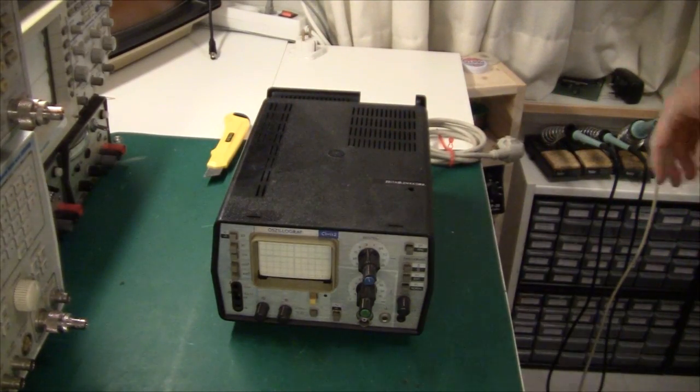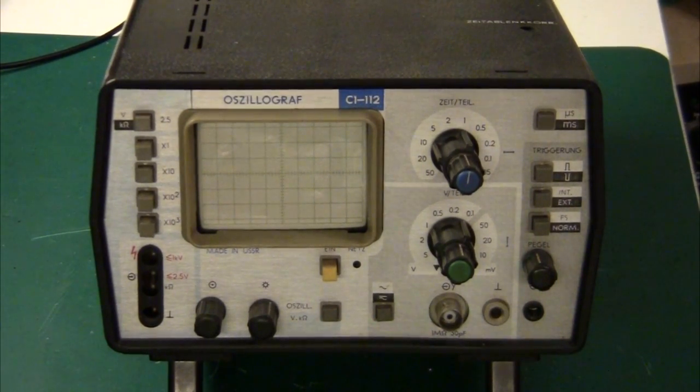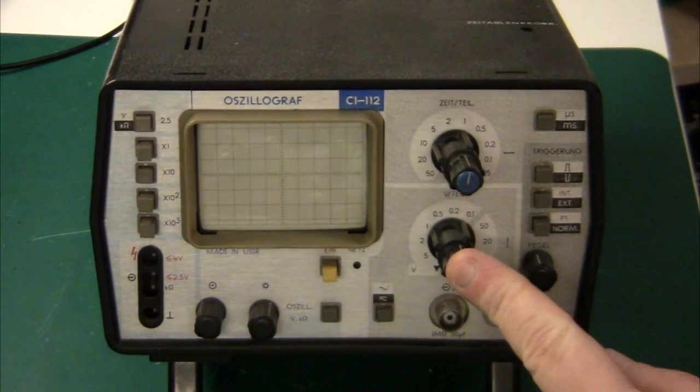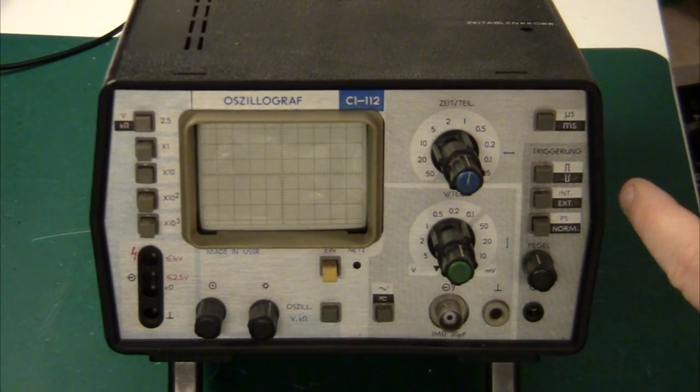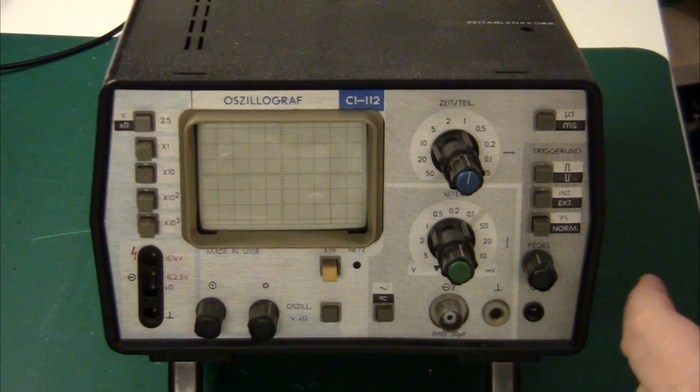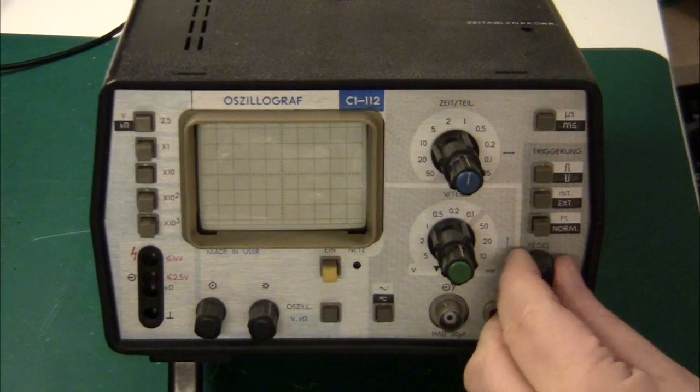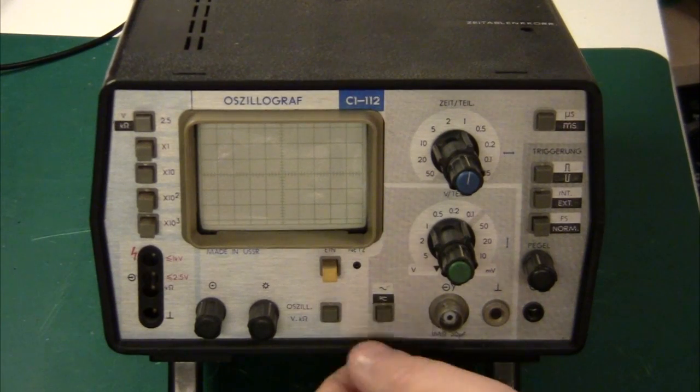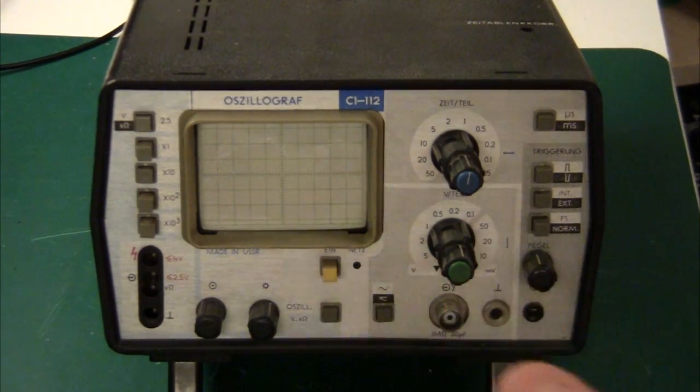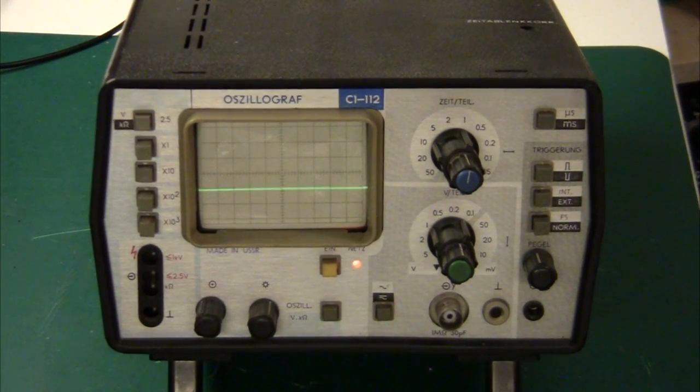Here we have a close up and it's very similar to a modern day oscilloscope. Here we have the horizontal adjustment, vertical adjustment, the trigger menu where we can select falling or rising edge, internal, external, and FS. Then there's the level for the trigger. Down here we have the input and AC or DC coupling. All the basic knobs and controls for an oscilloscope.